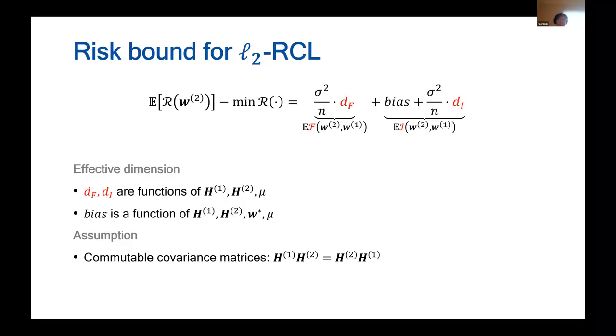In this analysis, we are making an assumption that these two covariance matrices are commutable to eliminate the optimization error and only leave the interesting generalization error.